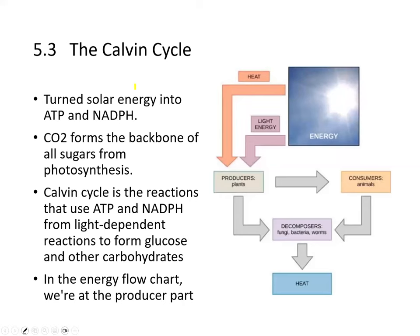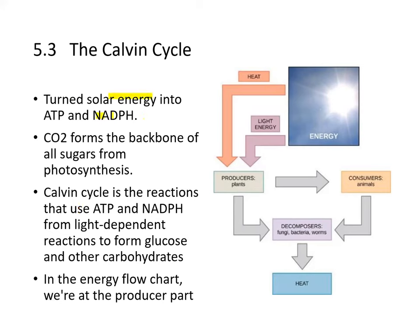We'll continue with the Calvin cycle, or the dark reaction, dark cycle of photosynthesis. We basically turned solar energy to ATP and NADPH — now we get to use it. CO2 forms the backbone for all sugars from photosynthesis, and the Calvin cycle is the reaction that uses ATP and NADPH from the light-dependent reactions to form the glucose molecules and other carbohydrates.